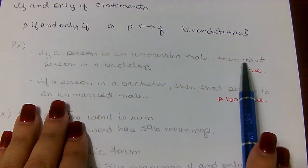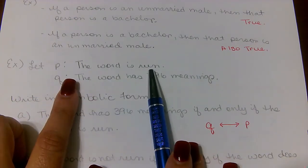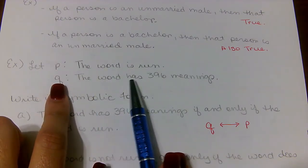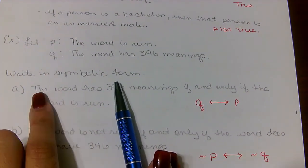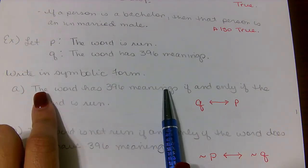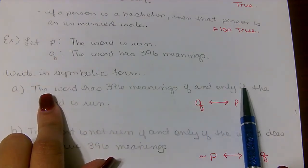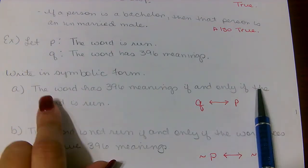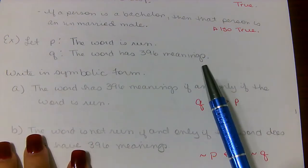Both ways have to be true to use the biconditional. Let P be 'the word is run' and Q be 'the word has 396 meanings.' For part A, writing in symbolic form: the word has 396 meanings is Q, so Q goes first, then the 'if and only if' double arrow, then the word is run, which is P. So we have Q ↔ P.